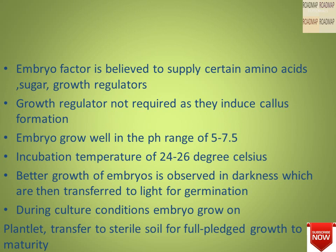Growth regulators are mostly not required as they can induce callus formation. Embryos grow well at a pH of 5 to 7.5. The incubation temperature required is 24 to 26 degrees Celsius. Better growth of embryos is observed in darkness, and they are then transferred to light for germination. During culture, embryos grow on plant media and are then transferred to soil for full-fledged growth to maturity.